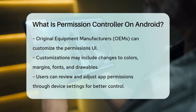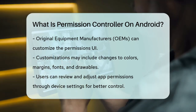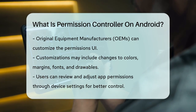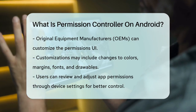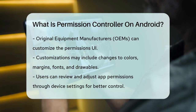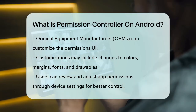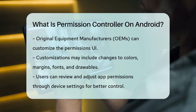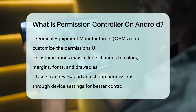In summary, the permission controller is a vital tool that helps you manage and control how apps interact with your device's sensitive features, ensuring your privacy and security are well protected. By navigating to your device's settings, you can review and adjust the permissions granted to each app, giving you full control over what data and features each app can access.